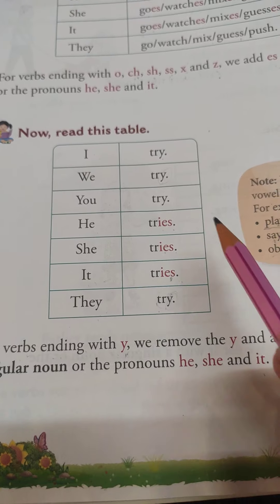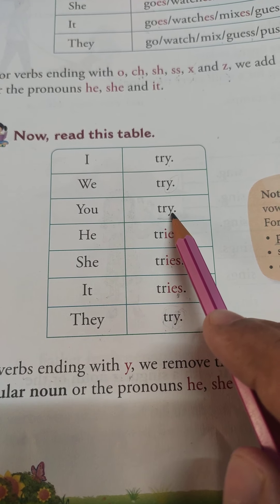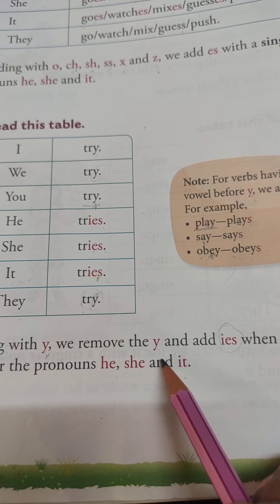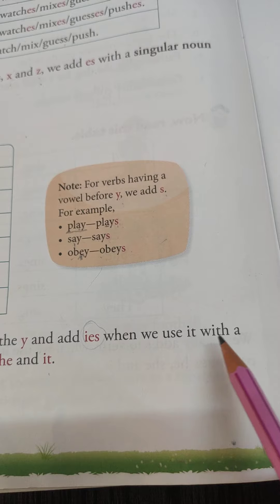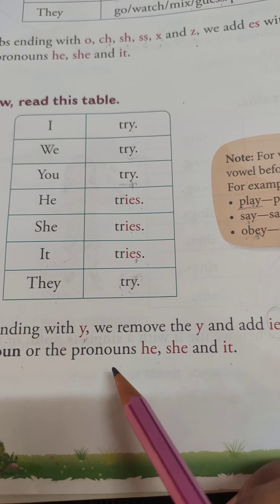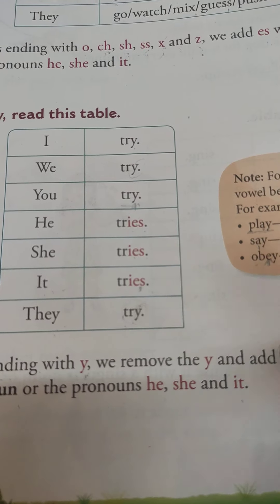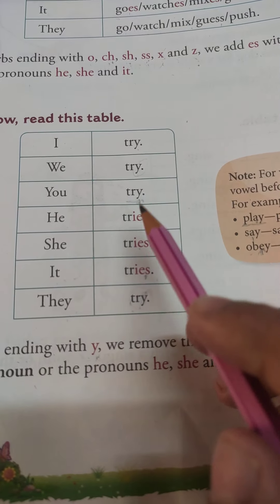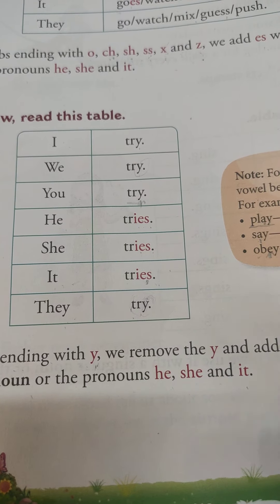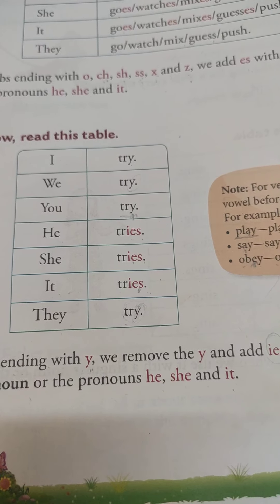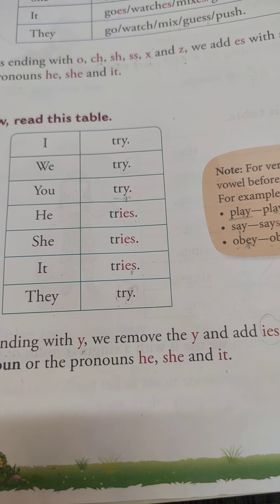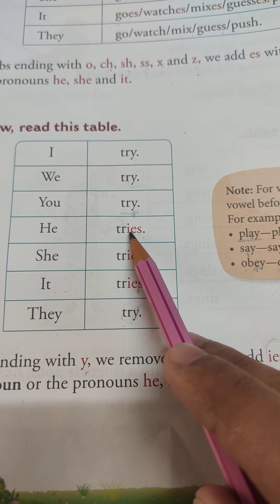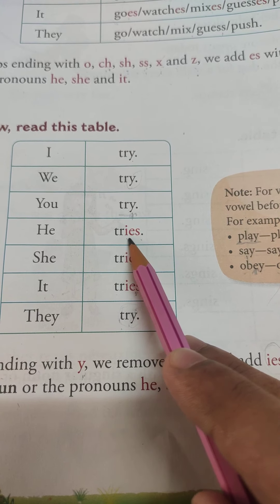For verbs ending with 'y': in the verb 'try', y comes at the end. When we use it with a singular noun or the pronouns he, she, and it, we remove the y and add 'ies'. For example, Kumar tries to sing a song — Kumar is a singular noun, so we remove y and add 'ies'.